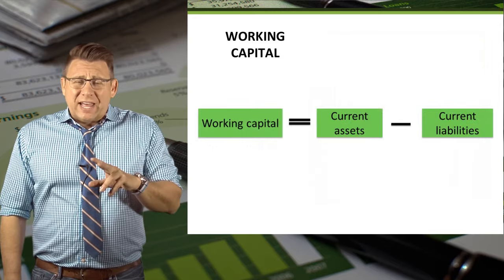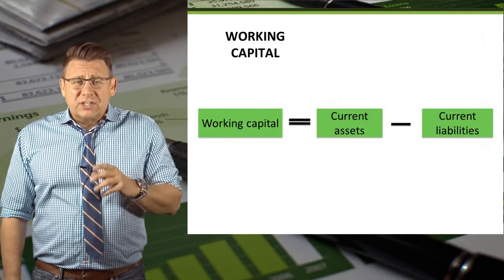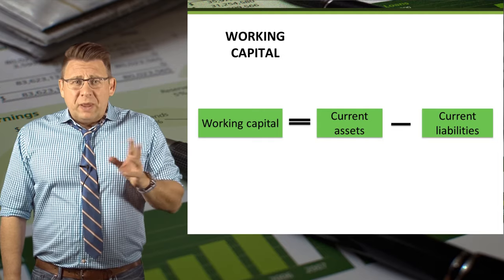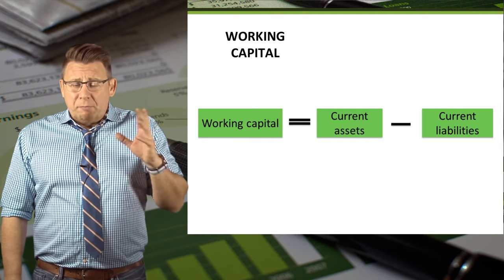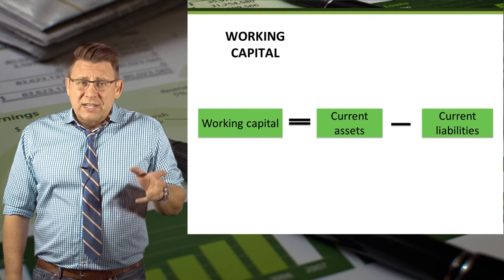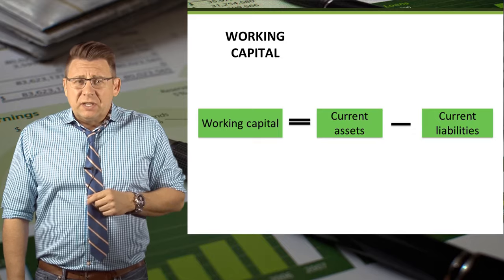Working capital is calculated as current assets minus current liabilities. It's basically just the amount of current assets a company has more than its current liabilities.